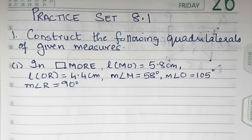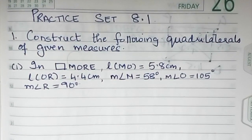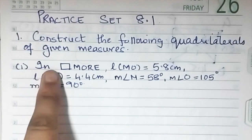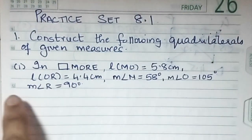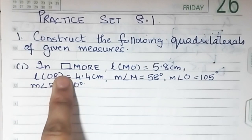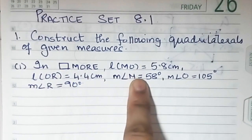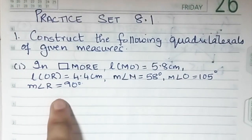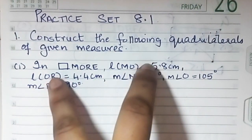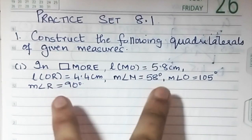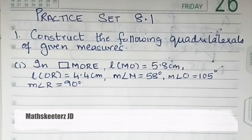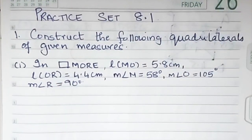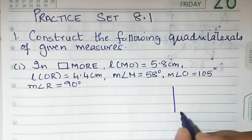Let's begin with practice set 8.1 today. The first question says you have to construct the following quadrilaterals with the help of the given measures. The first one is quadrilateral MORE: MO is 5.8, OR is 4.4, angle M is 58°, angle O is 105°, and angle R is 90°. So basically we've got two line segments and three angles given. First of all, we need to draw the rough figure.